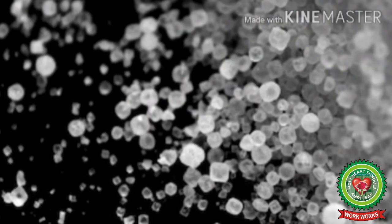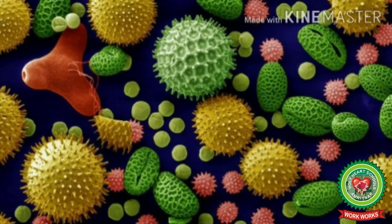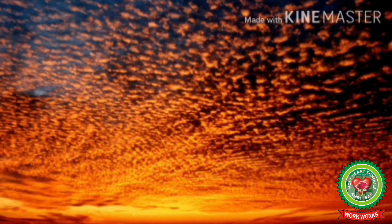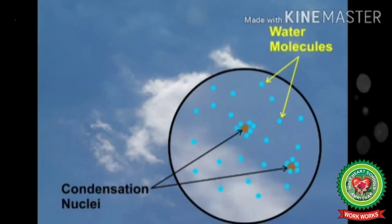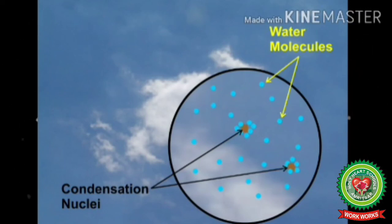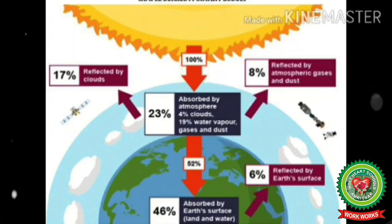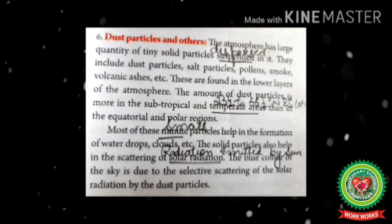Next we have dust particles. The atmosphere has a large quantity of tiny solid particles suspended in it. They include dust, smoke, salt particles, pollen grains, etc. They scatter solar radiation, causing red or orange color in the sky during sunrise and sunset. They also play a significant role in the process of condensation and are called hygroscopic nuclei, as they become the centers around which raindrops form. Dust particles are so fine that they float in the air and play an important role in weather phenomena.